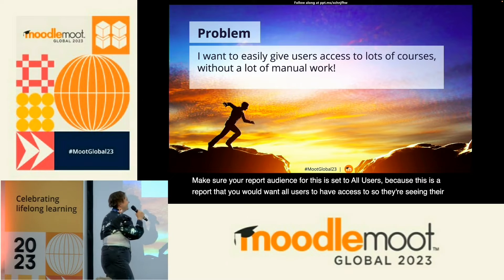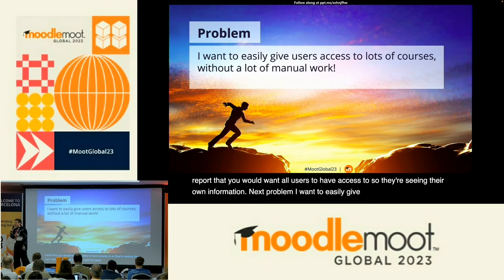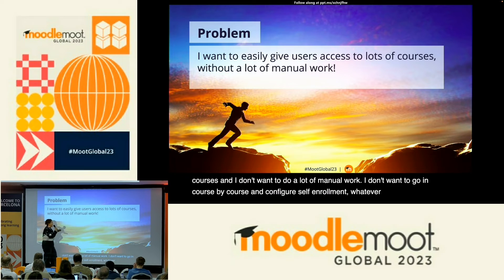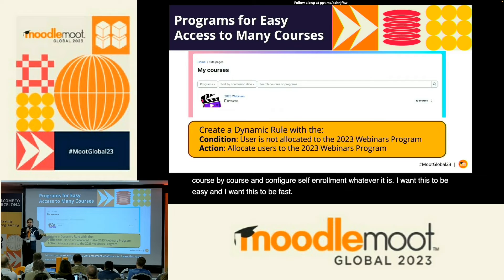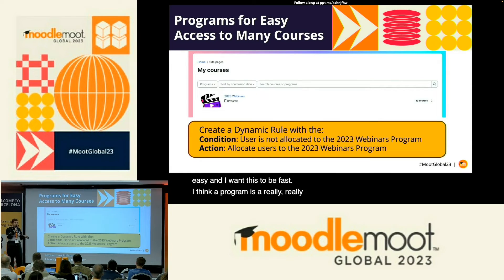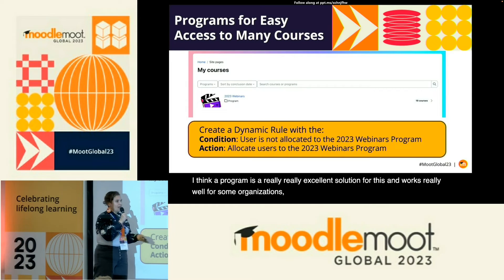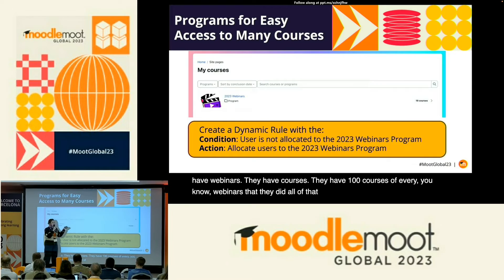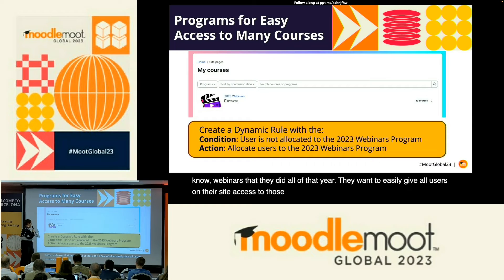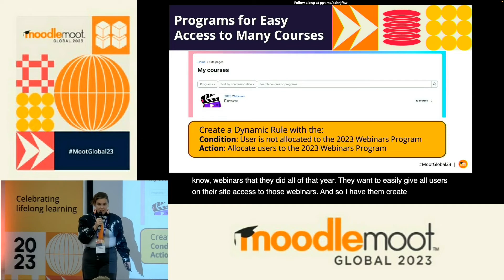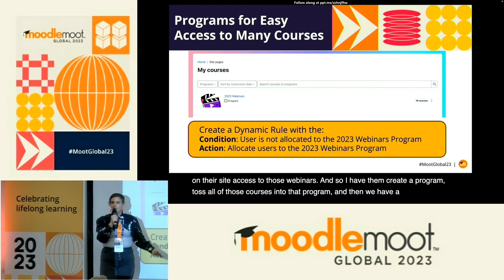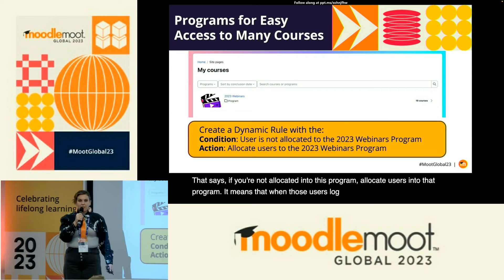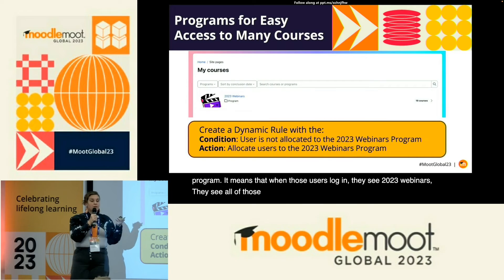Next problem: I want to easily give users access to lots of courses and I don't want to do a lot of manual work — going course by course to configure self-enrollment. A program is a really excellent solution for this. For example, organizations that have webinars and a hundred courses from that year — create a program, toss all those courses into it, and set up a dynamic rule that says if you're not allocated into this program, allocate the user. When users log in, they see all those courses and can access whatever they want with very little work.